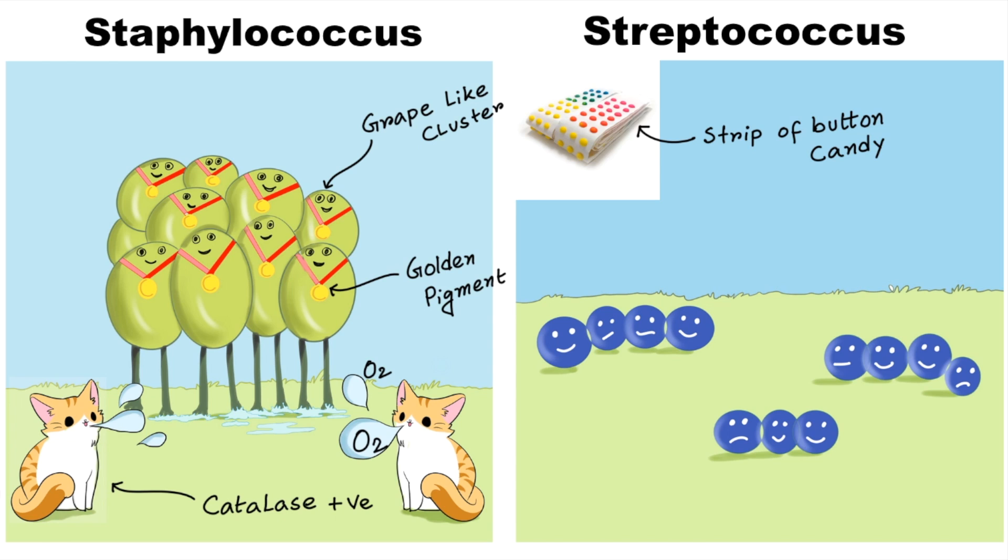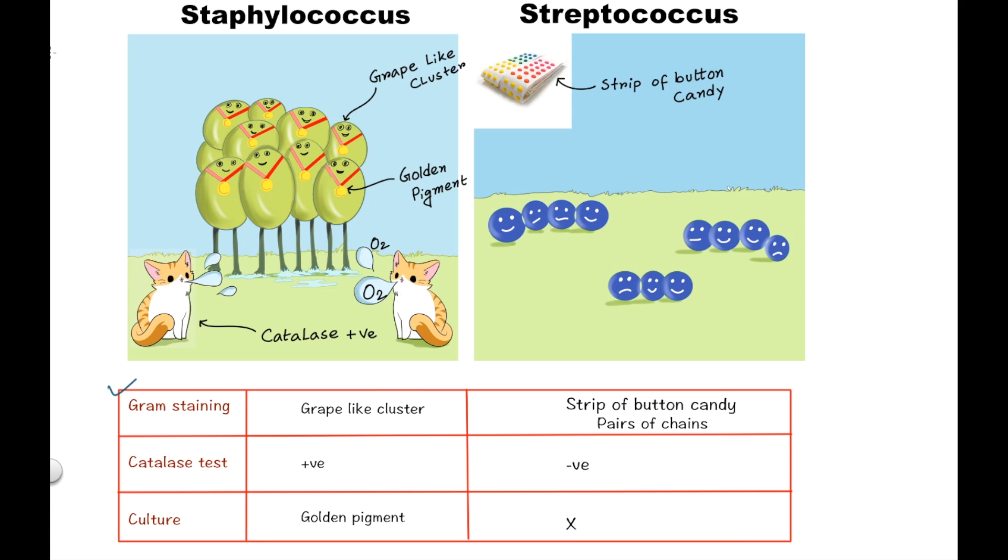So in short, on gram stain, streptococci have a strip of button candy or pairs of chain-like appearance, and staphylococci have a bunch of grape-like appearance. Streptococci is catalase negative, but staphylococci is catalase positive. And staphylococci produce golden pigment in culture, but streptococci do not.